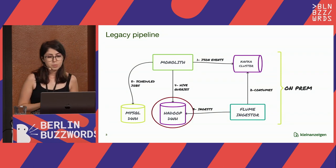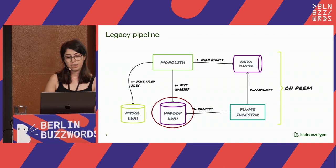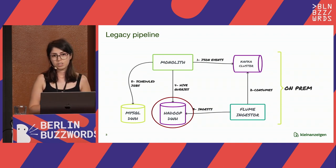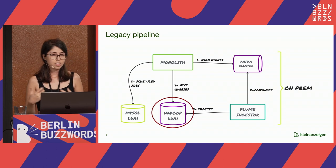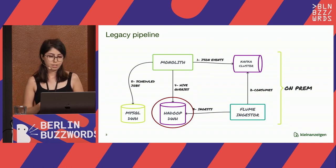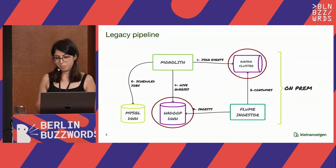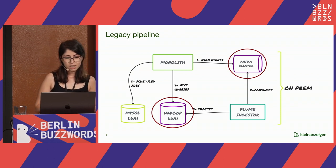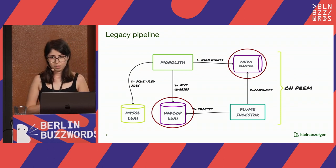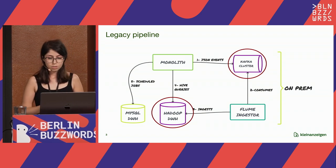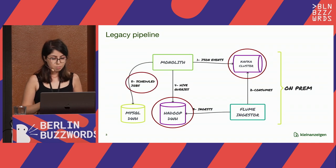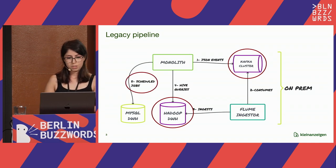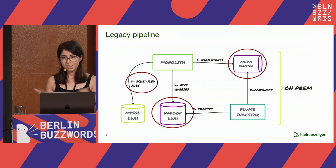The problematic piece was the Hadoop data warehouse. It was on a very old version, and maintenance was very costly, so the central teams wanted to get away from it. Another problem was the Kafka cluster — again a version problem — and the central teams wanted to shut it down. Last but not least, the scheduled jobs running from the backend service were failing silently, and nobody was noticing. Until we noticed, the data was lost.